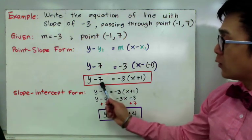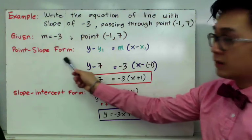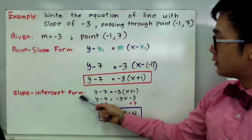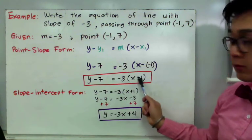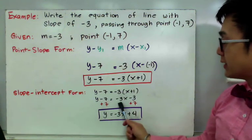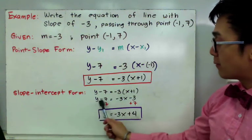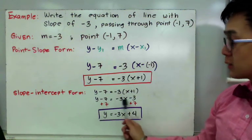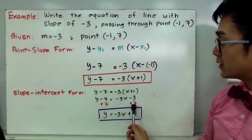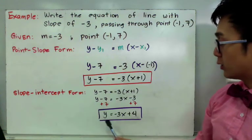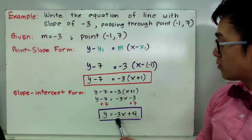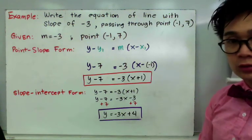From the point-slope form, you can convert this equation into the slope-intercept form. To do that, distribute negative 3 to the parentheses and solve for y by itself. Negative 3 times x plus 1 gives us negative 3x minus 3, leaving us with y minus 7 equal to negative 3x minus 3. Then add 7 on both sides to get the slope-intercept form: y equal to negative 3x plus 4, where the slope is negative 3 and the y-intercept is 4.